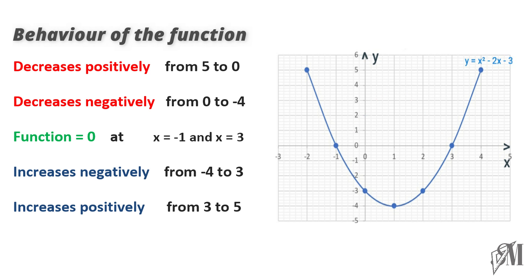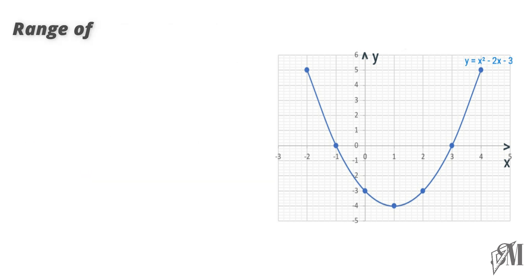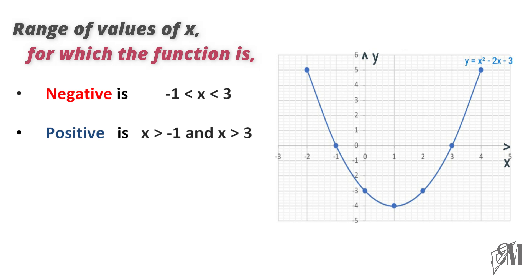The next part from minus 4 to 0 is an increment. It increases negatively, whereas the final part from 3 to 5 increases positively. Through these details you can see that the function is negative or takes negative y values, or we can even say it lies below the x-axis when x lies between minus 1 and 3. Whereas the function is positive or above the x-axis when x is less than minus 1 and when x is greater than 3.